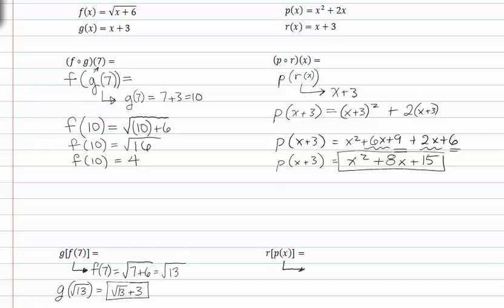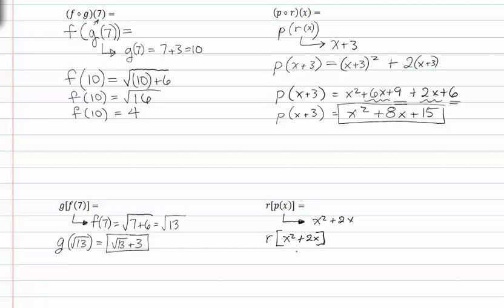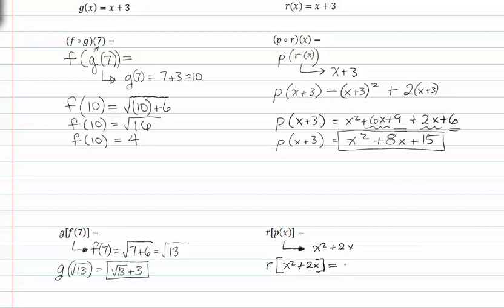So p of x is equal to x squared plus 2x. So we can rewrite this as r of x squared plus 2x. Now we can evaluate r of x squared plus 2x. We know that r of x is x plus 3, so now I'll plug this in for x. So r of p of x is equal to x squared plus 2x plus 3.